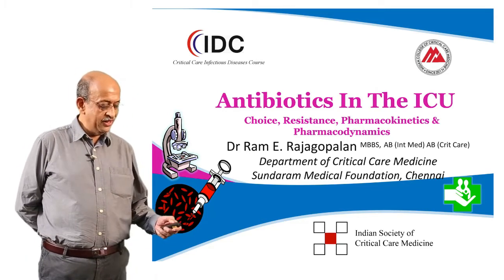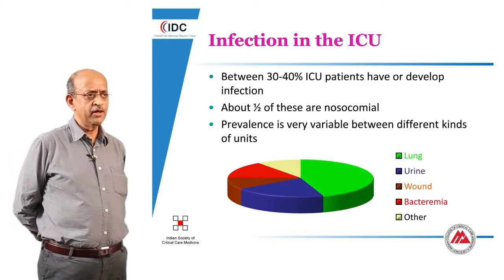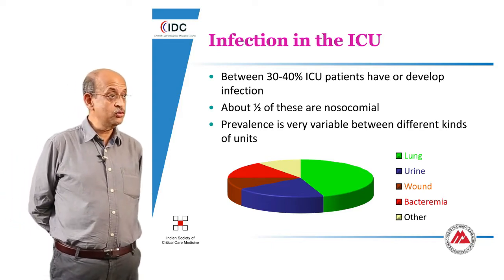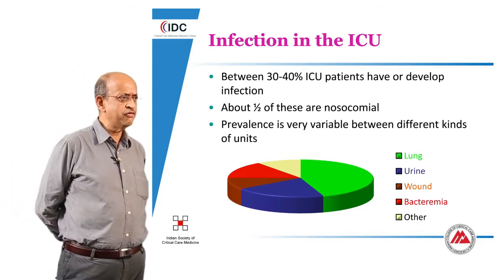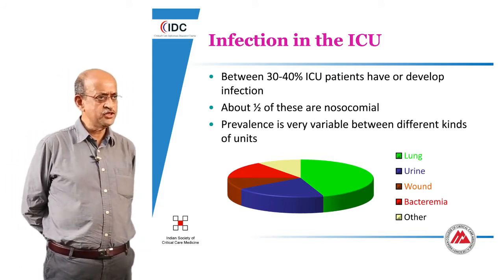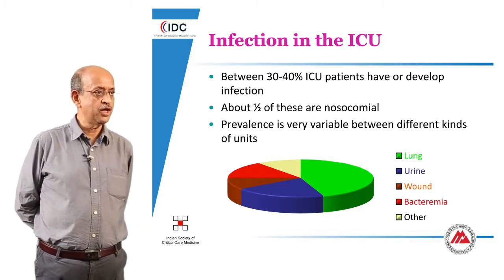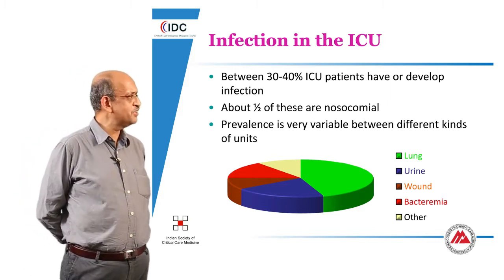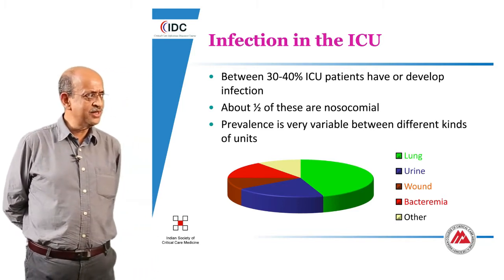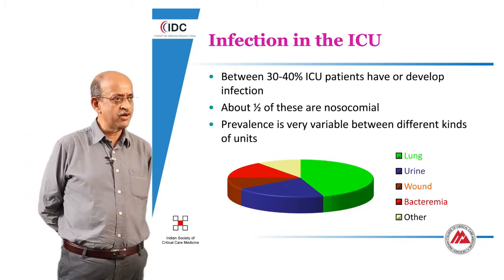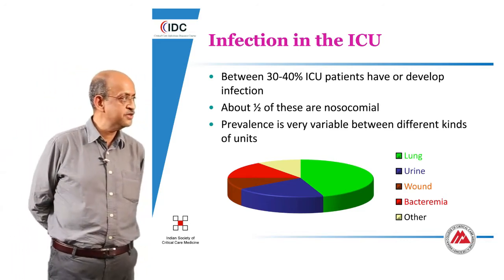It is extremely common for people to develop an infection in the ICU or come to the ICU with an infection. Roughly half the number of patients in the ICU are probably infected or will develop an infection at some time or the other. These infections can be of varying types, but there is a dominance of respiratory and bacteremic infections in the intensive care patient.